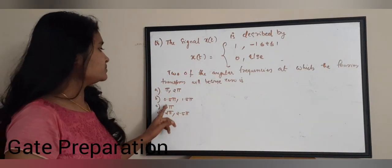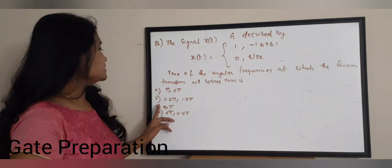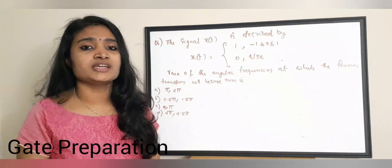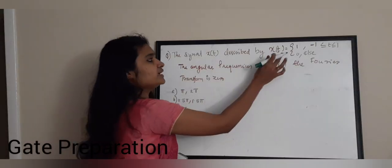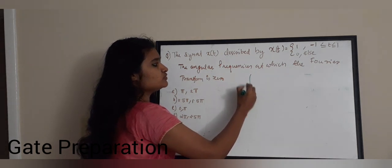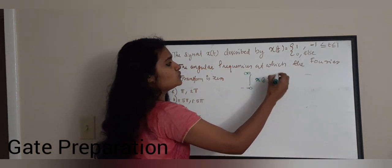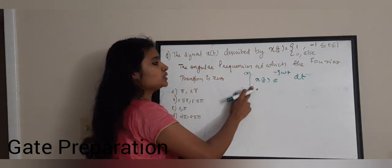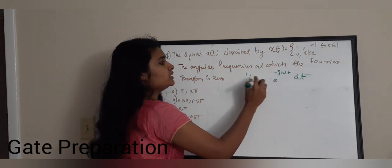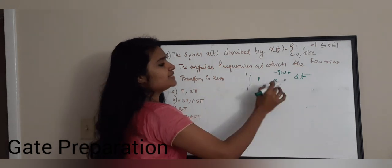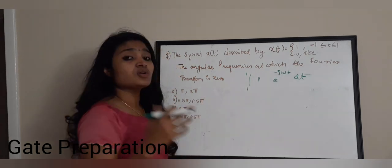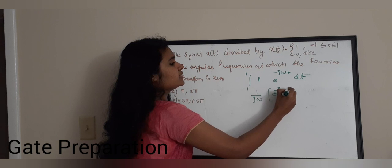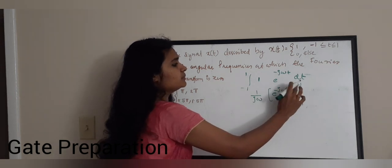The options are: Option A — π, 2π; Option B — 0.5π, 1.5π; Option C — 0, π; Option D — 2π, 2.5π. To solve this, we find the Fourier transform: X(jω) = integral from minus infinity to infinity of x(t)·e^(−jωt) dt. Since x(t) = 1 only for −1 to 1, the integral becomes the integral from −1 to 1 of e^(−jωt) dt, which evaluates to (1/jω)·e^(−jωt) with limits −1 and 1.